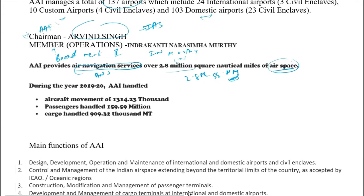In the year 2019-20, AAI handled a total aircraft movement of 1,314,230, with passengers of 1.159.59 million and a cargo handling of 2,09,321 metric tons. This represents the last year's performance of AAI in terms of passenger, aircraft, and cargo handling.